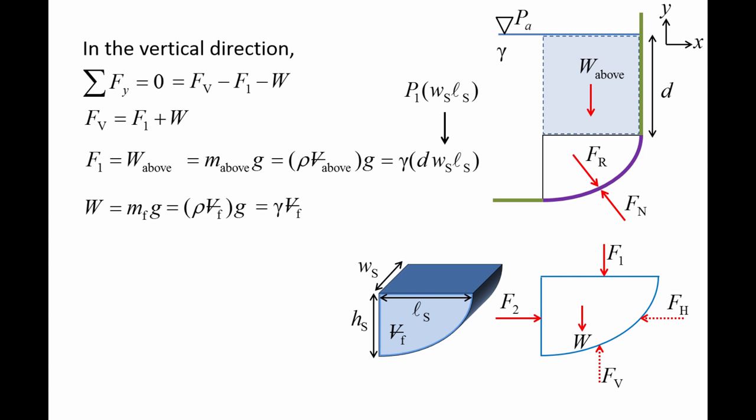At this point, we would need to know the volume of the isolated fluid body to continue. For simple shapes, it may be easy to determine this volume. However, if the surface is irregular, then it may be difficult to determine the volume. The magnitude of the normal force is the square root of the sum of the squares of the components, and the orientation angle is equal to the inverse tangent of Fv divided by Fh. The resultant force Fr is equal in magnitude and opposite in direction to Fn.